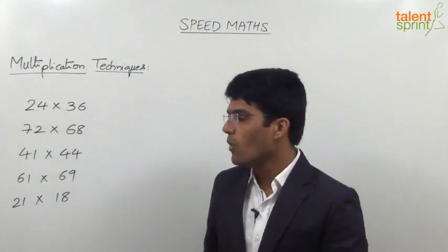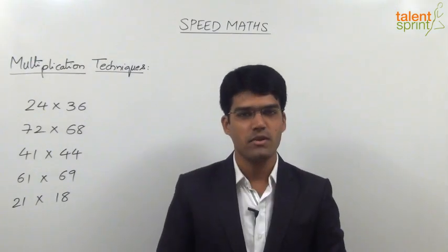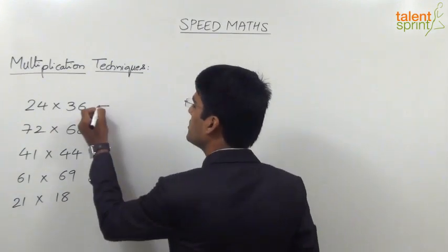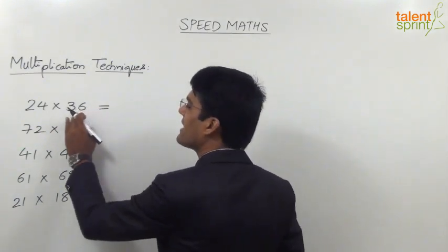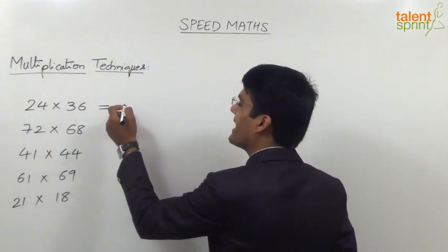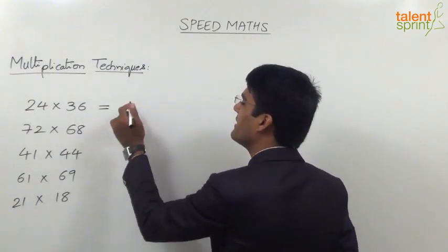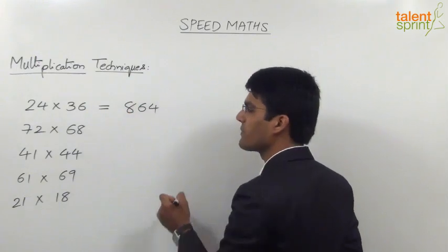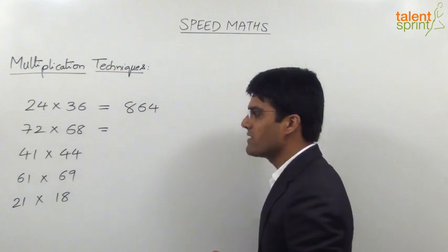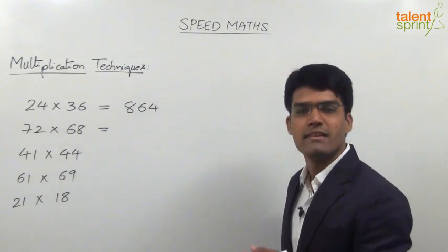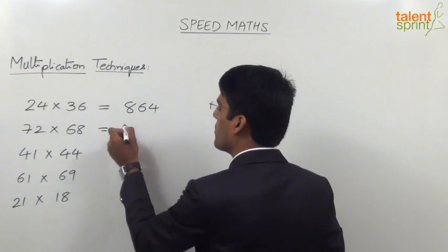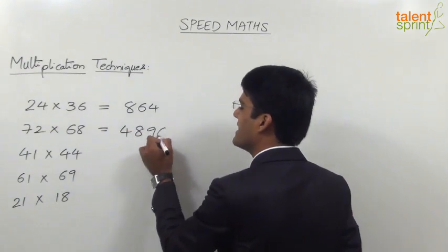Let us now see the correct answers for these five questions. The first one is 24 into 36, which can be taken as (30 + 6)(30 - 6) = 30² - 6² = 900 - 36 = 864. The second one is 72 into 68, which is (70 + 2)(70 - 2) = 70² - 2² = 4,900 - 4 = 4,896.